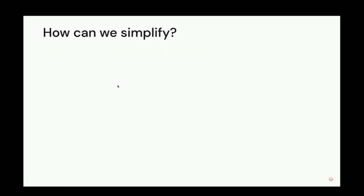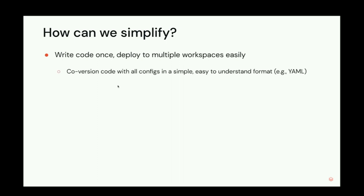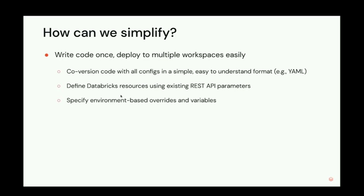Now we understand the challenges and mechanics. How are we going to simplify this? Ideally, we would write our code one time and deploy it to whatever workspace we want. This would include co-versioning our code with all the configurations, hopefully in a simple, easy-to-understand format. We want to use the existing REST API schema so we don't have to relearn a new way to describe things, add environment-based overrides, and ensure isolation.